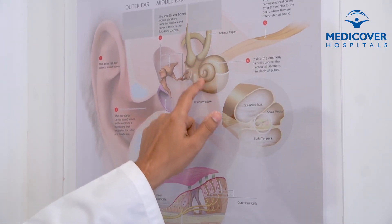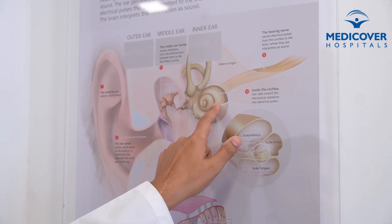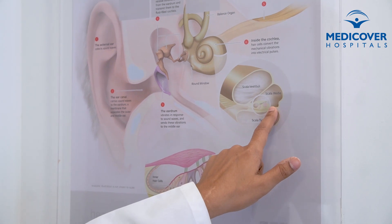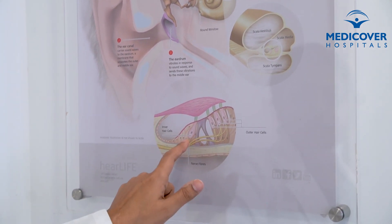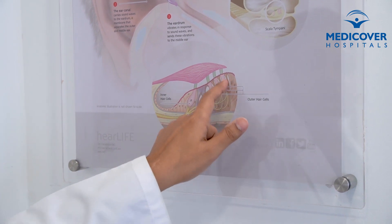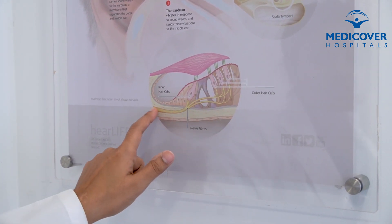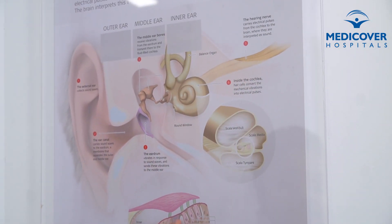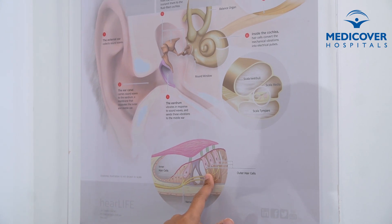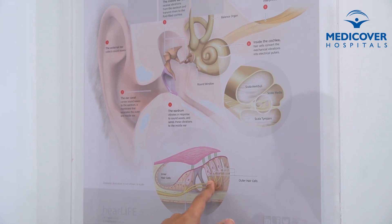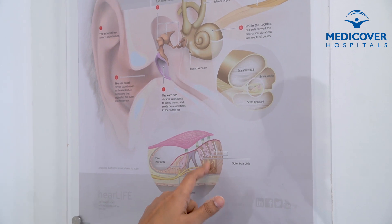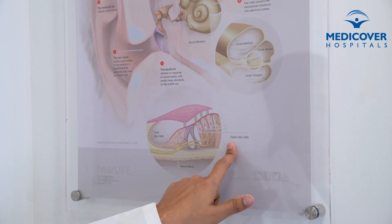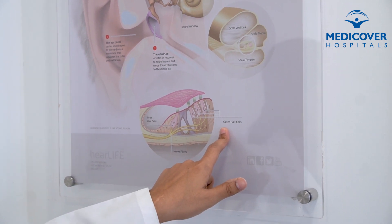The cochlea, or inner ear, is a structure with two and a half turns, and if we examine the cross section, it has three chambers within it and this particular membrane is called the basilar membrane. It has specific cells called outer hair cells from where the nerve fibers start, and they ultimately unite to make the cochlear nerve. This cell has a magical role — it can convert the mechanical energy which comes as a vibration, that is the sound, into a signal which the nerves can understand and carry to the brain.